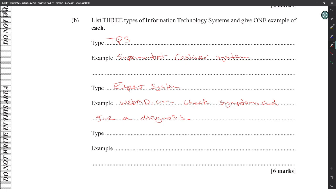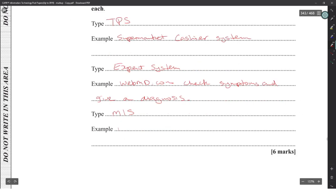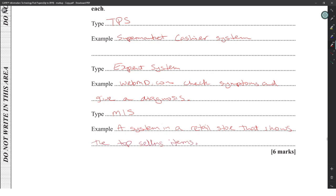An expert system answers questions corroborated from a large knowledge base. Third, a Management Information System (MIS) — an example could be a system in a retail store that shows the top-selling items.